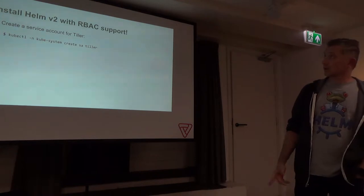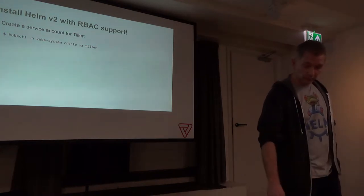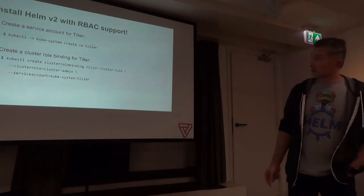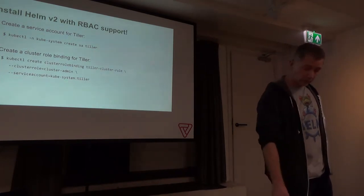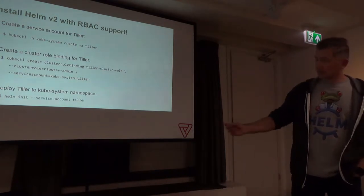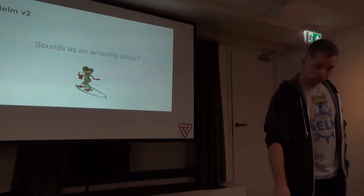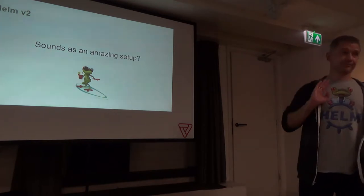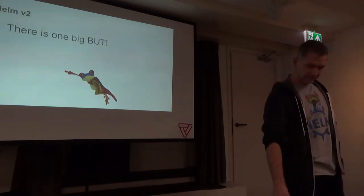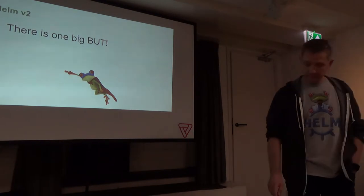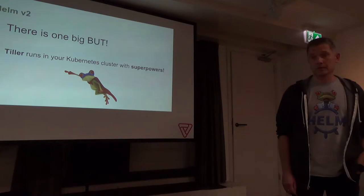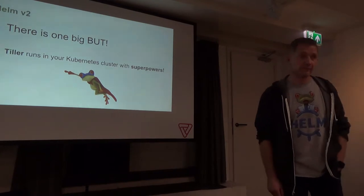RBAC cluster — cool. So we have to install Tiller, create a Tiller service account, assign role binding for Tiller, deploy Tiller. It's an amazing setup. But there is one big bug: Tiller gives your Kubernetes cluster superpowers. It can do anything. That's a problem.